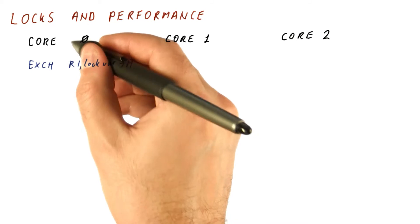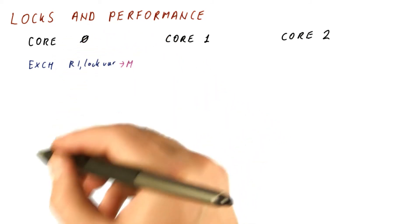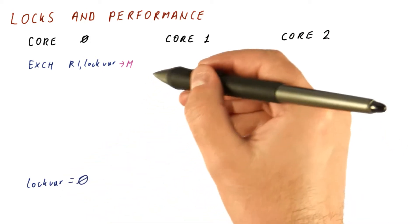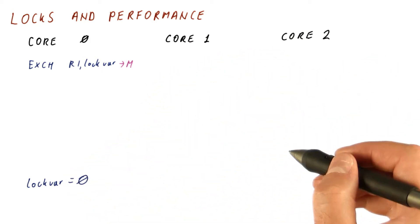Now, eventually, core zero, which grabbed the lock, will unlock by writing zero to the lock var. But the question is what happens meanwhile on core one and core two?